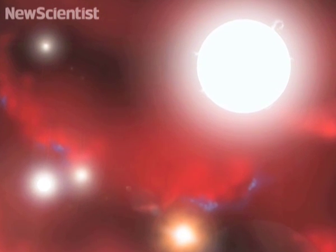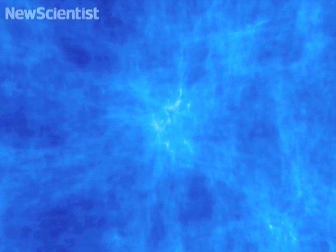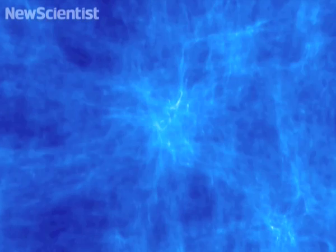A new computer simulation reveals that the first stars were giants. Here it shows how they formed about 300 million years after the Big Bang.